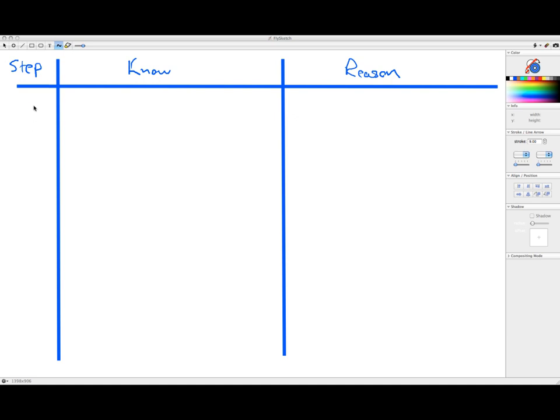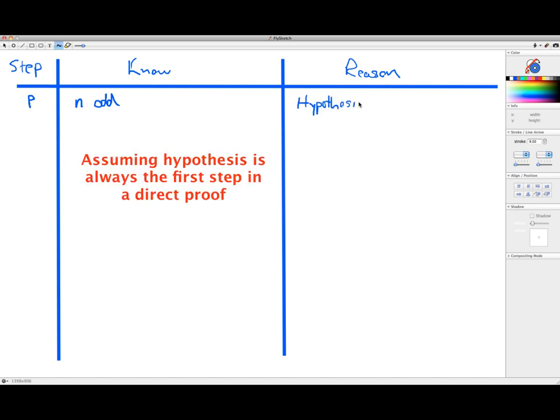The first step in this proof, and we're going to label that P, which is our usual label for the hypothesis, is to assume the hypothesis. If I assume the hypothesis, what I know is that n is odd. Why is that? Because that's the hypothesis. Assuming the hypothesis is always the first step in a direct proof of a conditional statement.